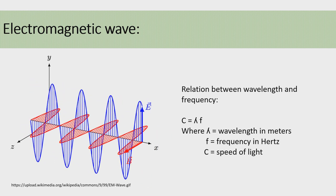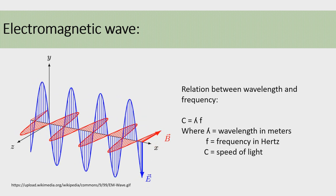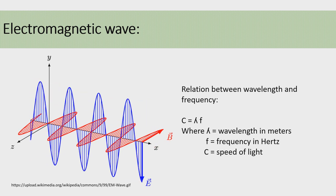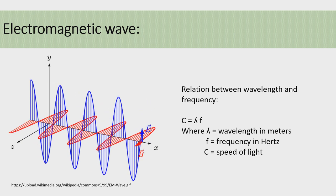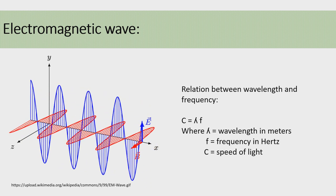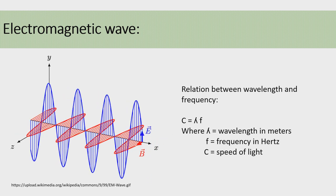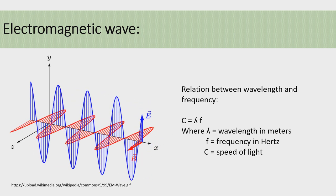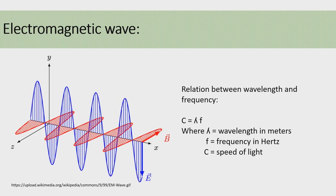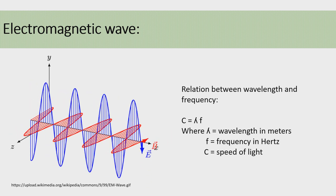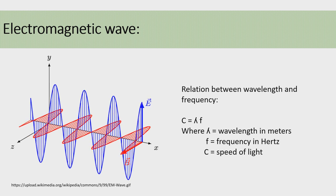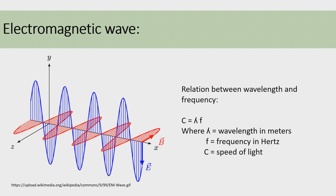In wired communication, the signal is transported from one point to another through cable or wire as an electrical signal. But in case of wireless communication, the medium of communication is air, and therefore we cannot send electric waves directly through the air. For that, we have to convert the electric waves into electromagnetic waves, like those you can observe in the image.